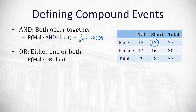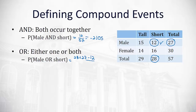A second compound event is the OR, where we want either one of the events to occur, or both. For male OR short, we include all males and all short people. Since the overlap is counted twice, we add the 28 short people plus the 27 males and subtract the 12 who are both, giving 43 out of 57, which is 0.7544.